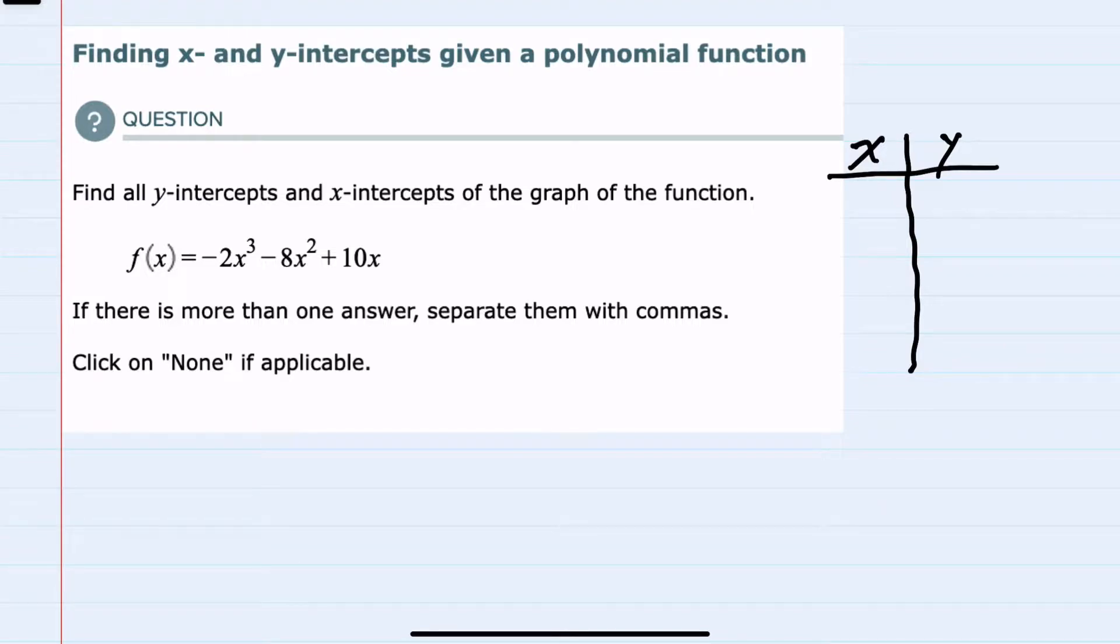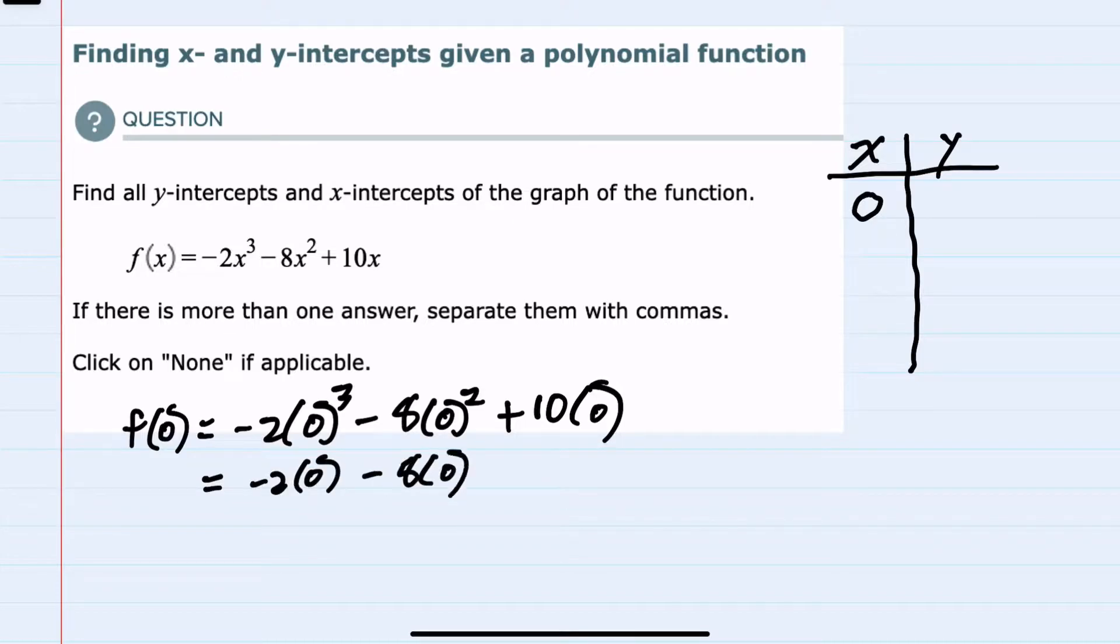I know that a y-intercept occurs when x equals zero. So to find my y value I can go to our function and replace x with zero for each occurrence of x. Then we can simplify starting with the exponents. Zero to the third is zero, zero squared is zero, and ten times zero is zero.